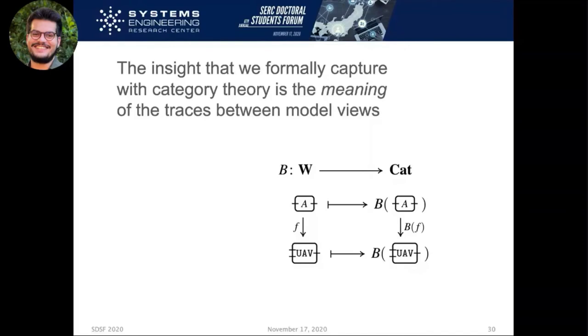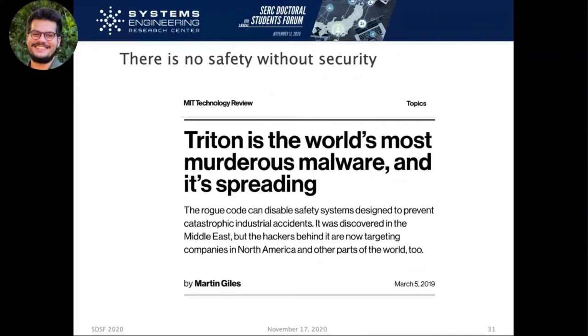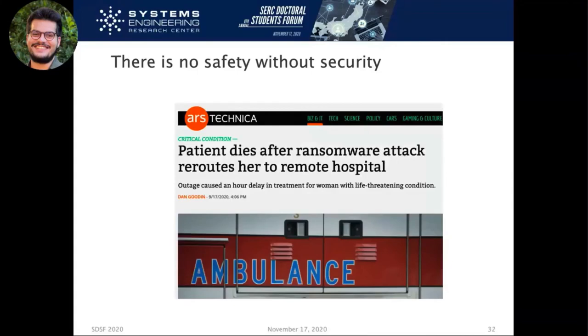As you go into safety engineering, you realize that there is no safety without security while there's security without safety. And that has become more shown in recent years. We have Triton here, which was a direct attempt at attacking a plant and attacking particularly the safety systems of the plant. But you also have emergent effects, like someone is not really trying to kill anybody. But by a ransomware attack, which basically locks the systems in a hospital, a patient didn't have time to go there in time. For me, addressing safety and security as a co-engineering problem is important.